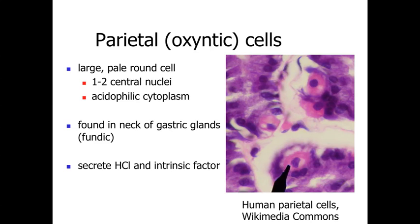The first cells we'll look at are the parietal cells, or oxyntic cells. These are found within the stomach glands — very prominently within the fundus and body region of the stomach. Parietal cells are relatively large cells with a pale, acidophilic, reddish-staining appearance to the cytoplasm, and centrally located nuclei with a relatively round appearance. These cells secrete hydrochloric acid and intrinsic factor, making them the primary acid-producing cells of the stomach.